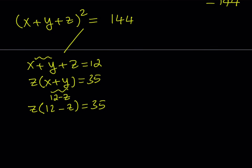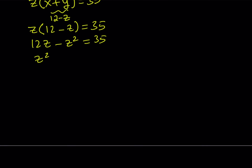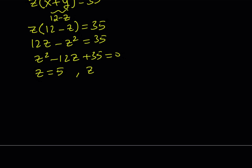Now we solve this equation for z by turning it into a quadratic. Putting everything on the same side gives z squared minus 12z plus 35 equals 0. This factors as (z minus 5)(z minus 7) equals 0, so z equals 5 and z equals 7. I factored this using the constant term 35 — looking for two numbers whose product is 35 and whose sum is negative 12, which are negative 5 and negative 7.